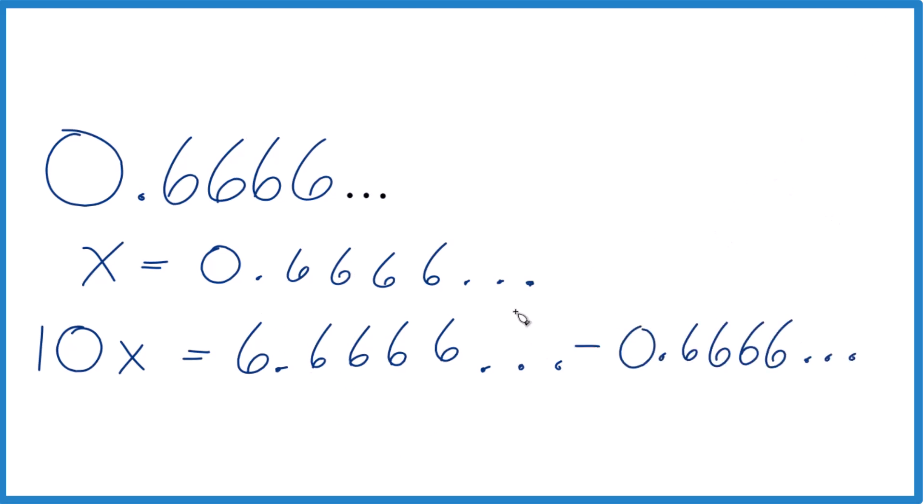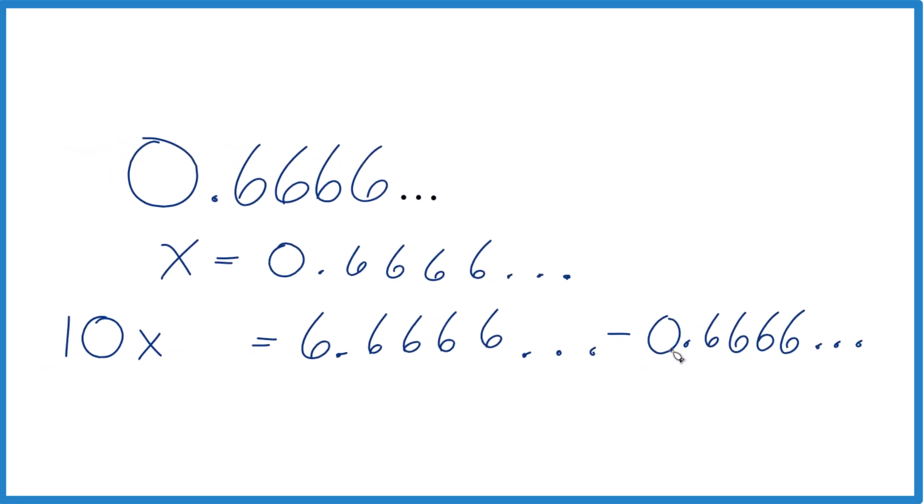But we can't just do it to this side. We need to do it to this side as well. And here's the trick. Let's move this over a little bit. 0.666666 and so on. That right here, that's equal to x. So we could just put 10x minus x. And this x here, that's the same thing as this number here. That's what we said when we started.